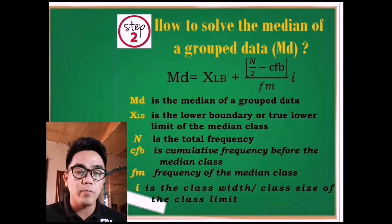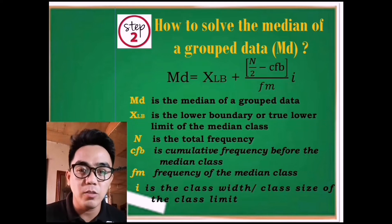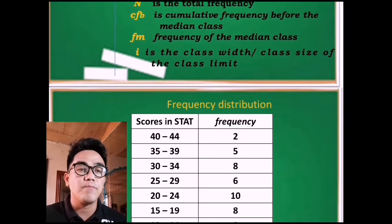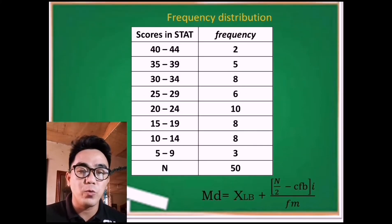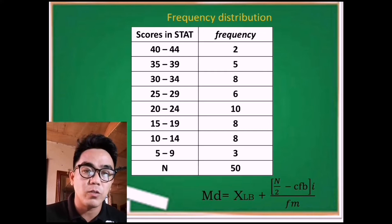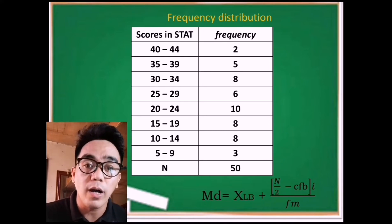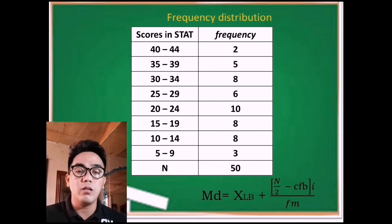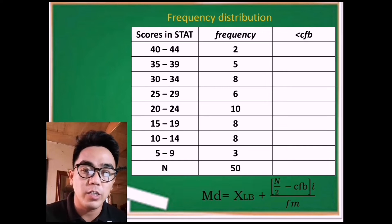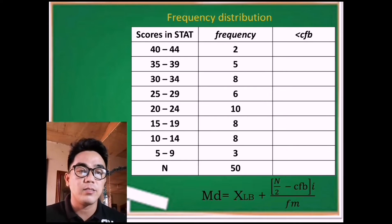Let us now combine the frequency distribution with the given formula. As you can see, we have two columns: a class limit or class interval with a corresponding frequency. In solving the median of grouped data, we only need to add one column, and that is the cumulative frequency before the median class. Here we have the symbol 'less than.'